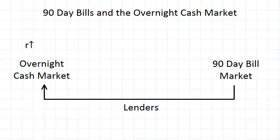Let us remember that in the context of bills, notes, and bonds, a lender is a buyer — you lend money by purchasing the bill and then eventually you get repaid when you receive the face value. So if we've got buyers leaving this market, then what we've got basically is a decrease in demand for 90-day bank bills.